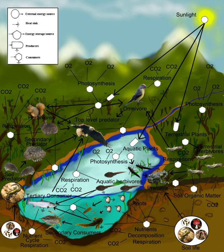Ecologists can broadly lump all life forms into one of two categories called trophic levels – the autotrophs and the heterotrophs. To maintain their bodies, grow, develop, and to reproduce, autotrophs produce organic matter from inorganic substances, including both minerals and gases such as carbon dioxide. These chemical reactions require energy, which mainly comes from the sun and largely by photosynthesis, although a very small amount comes from hydrothermal vents and hot springs.